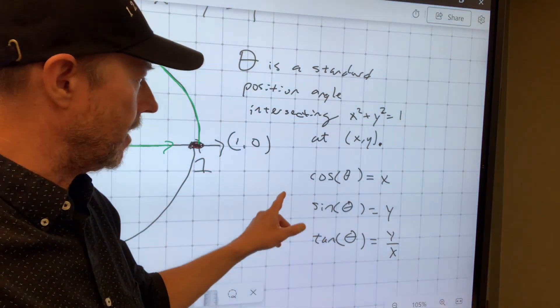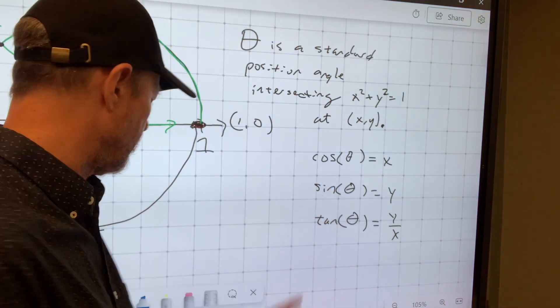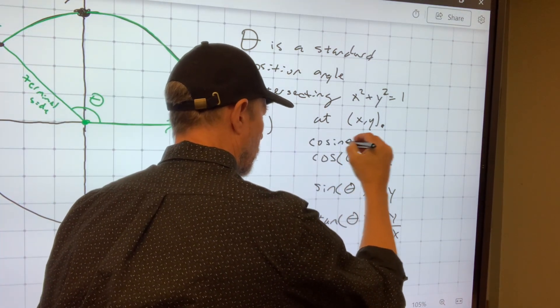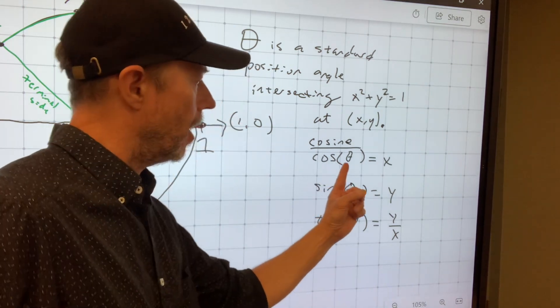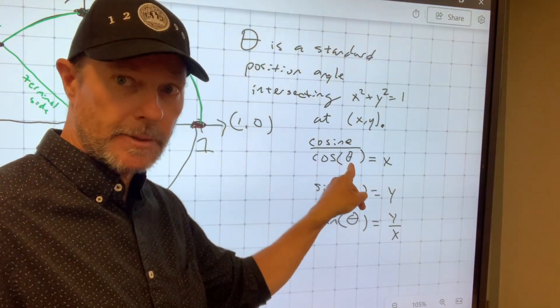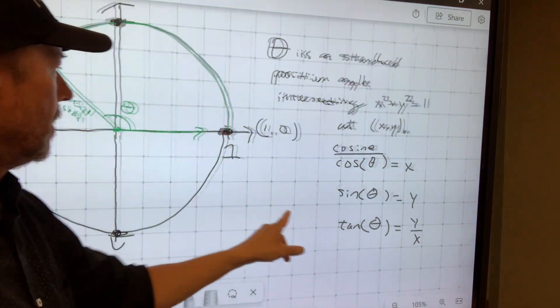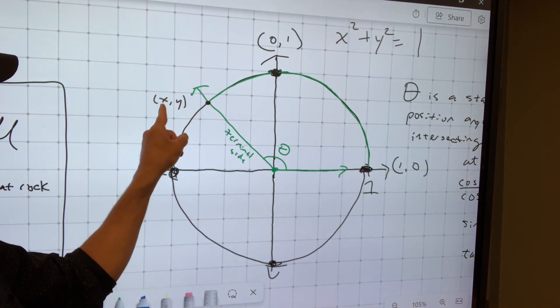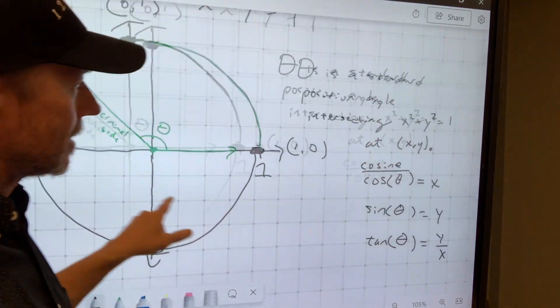If you have that, then cosine, which is denoted cos of the angle, is equal to x. So you put in the angle measurement, you get out the x-coordinate. So you put in the measurement of this angle, you get out the x-coordinate.